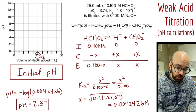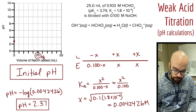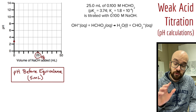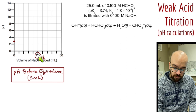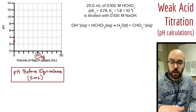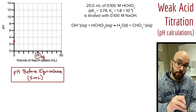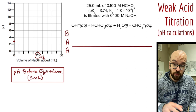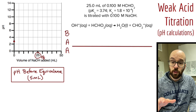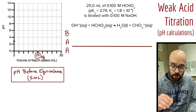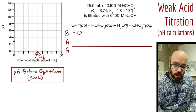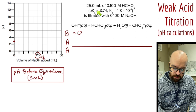I'll plot that initial pH on the titration curve. Now let's add some base — say 5 milliliters. We're before the equivalence point of 25 milliliters, so we first do a stoichiometry calculation using a before-add-after table, working in moles. Hydroxide starts at approximately zero. Our acid: 25 milliliters = 0.025 liters times 0.1 molar = 0.00250 moles. The conjugate base starts at approximately zero.